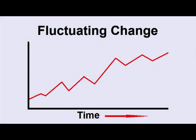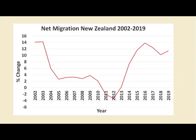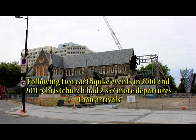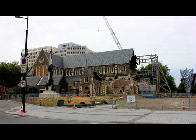A fluctuating temporal pattern is one where numbers are fluctuating but there is an overall trend. An example of this is net migration flows to New Zealand. Overall, New Zealand has gained far more immigrants than have left the country. However, in times of economic crisis there have been some years when New Zealand has had a negative net migration.